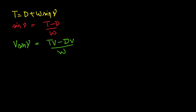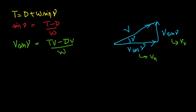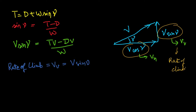If I multiply V on both sides of the equation, I get V·sinγ = (T·V − D·V) / W. Now consider this figure — the aircraft is flying with some velocity V at flight path angle gamma. Breaking it into components, V·sinγ is the vertical component of velocity and V·cosγ is the horizontal component. This vertical component V·sinγ is also known as the rate of climb.